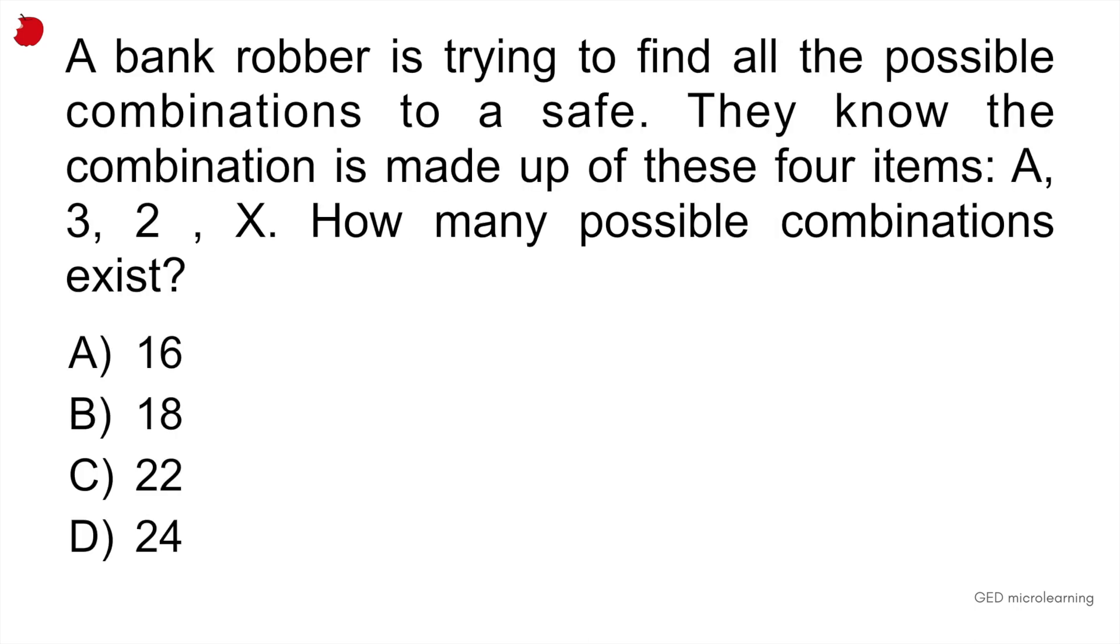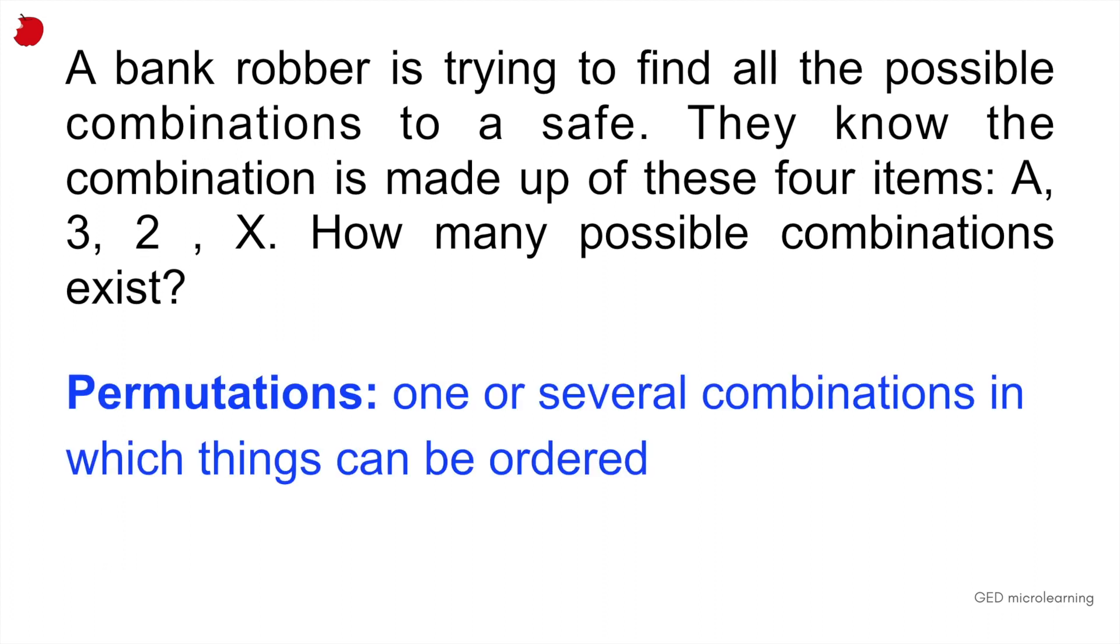Our first question today is basic arithmetic. A bank robber is trying to find all the possible combinations to a safe. They know the combination is made up of these four items: A, three, two, and X. How many possible combinations exist? So here basically what they're asking you is what is known as a permutation. A permutation is when you can take several items, like here we have four items, and combine them and order them in any kind of several ways.